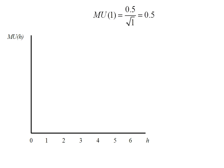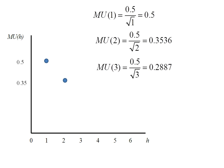The marginal utility we get from consuming one hamburger, we plug in one where we see h's, and we get 0.5. The marginal utility of the second hamburger is 0.3536. The marginal utility of the third hamburger is 0.2887. Marginal utility of the fourth hamburger is 0.25. And of the fifth hamburger is 0.22.